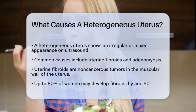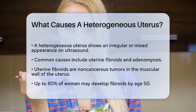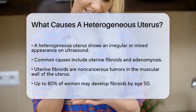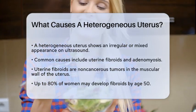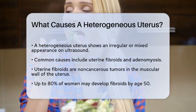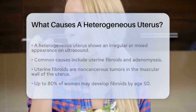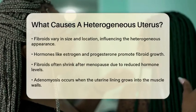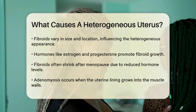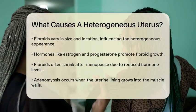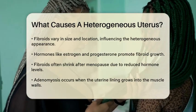Uterine fibroids are non-cancerous tumors that grow in the muscular wall of the uterus. They are very common, affecting up to 8 in 10 women by the age of 50. These fibroids can cause the uterus to appear heterogeneous because they can grow in various sizes and locations within the uterine wall. Fibroids are influenced by hormones such as estrogen and progesterone, which can make them grow. They tend to shrink after menopause due to the drop in hormone levels.